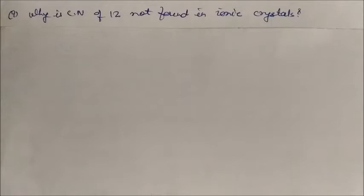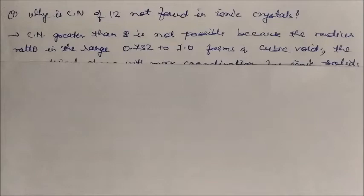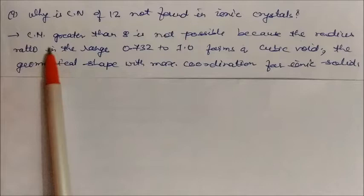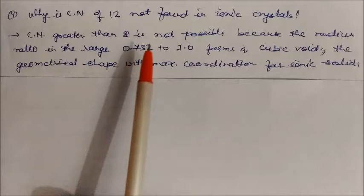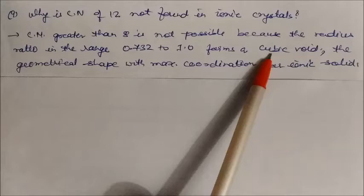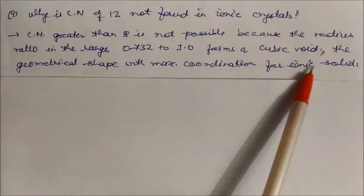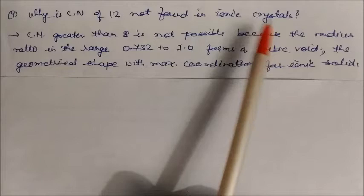Why is a coordination number of 12 not found in ionic crystals? A coordination number greater than 8 is not possible because the radius ratio in the range of 0.732 to 1 forms a cubic void. This radius ratio gives a cubic void geometry, which is the maximum coordination possible for an ionic solid. That's why we cannot get a coordination number of 12 in ionic crystals.